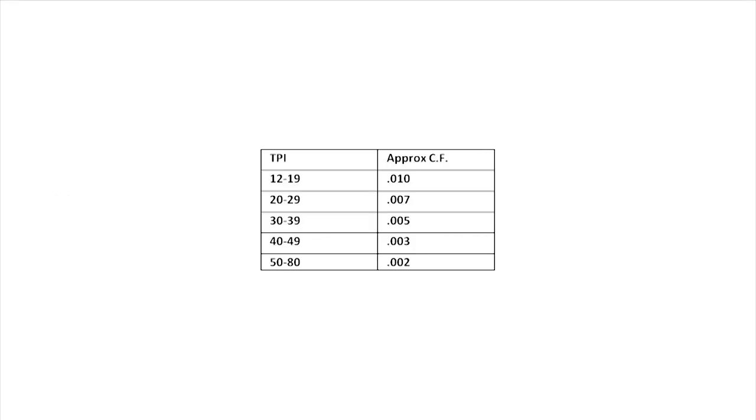About that correction factor: this table came right from the Dorian catalog. If they explained it, I either missed it or didn't understand it, because I just took this as a given. I have no idea where they got these numbers. Since I have 16 teeth per inch, my correction factor is 10 thousandths.